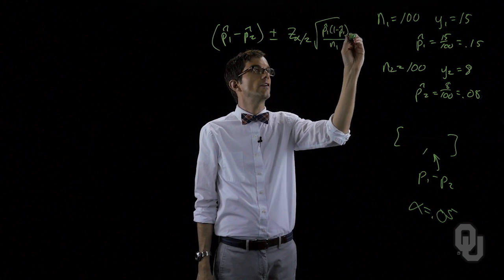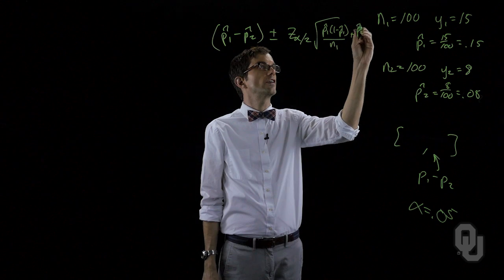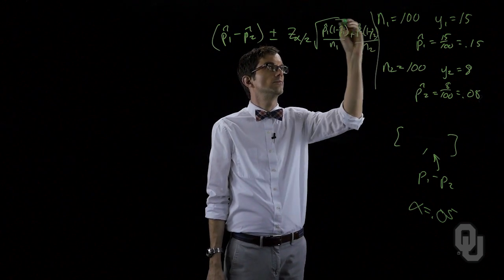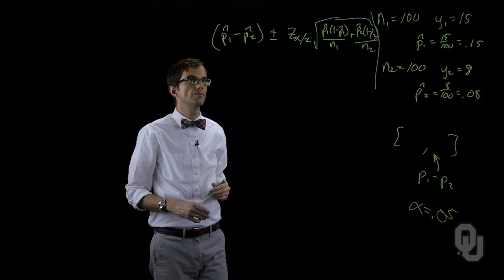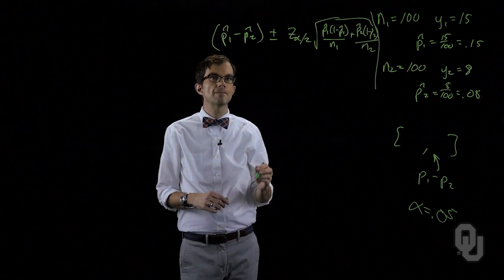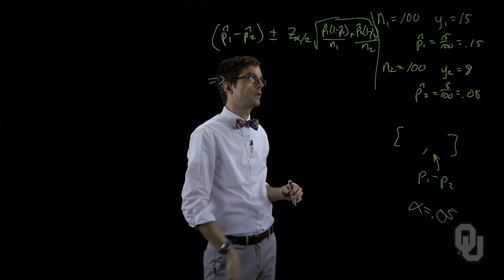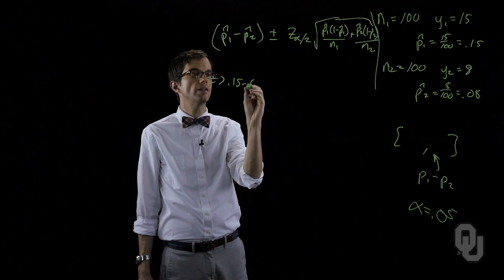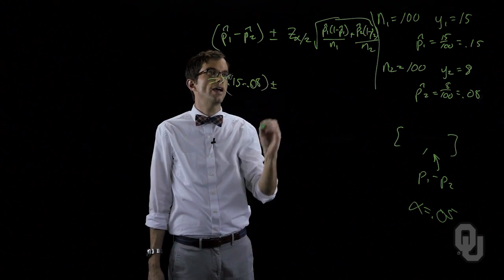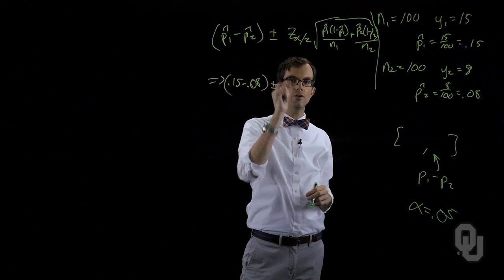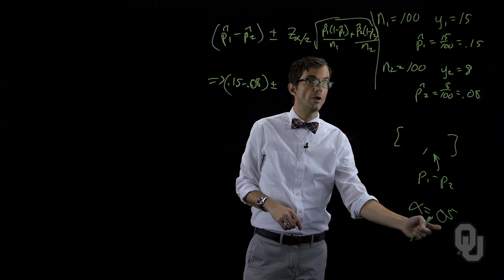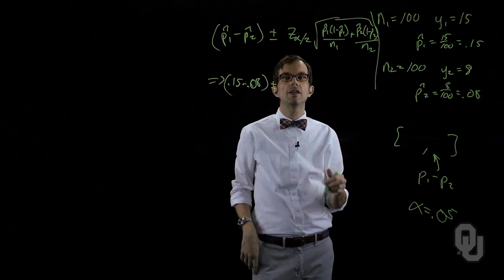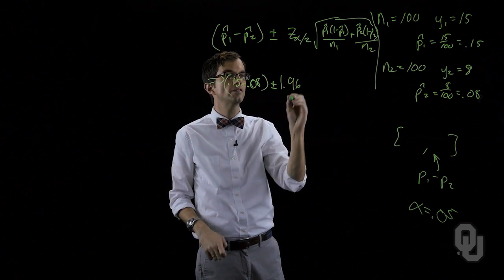So all we have to do is just plug these numbers in. So we've got point one five minus point oh eight. Add to it and subtract from it a z value associated with point oh two five in each tail. If we want to be ninety five percent confident, the value of z that we're going to use is one point nine six. That's the number that we probably have memorized.